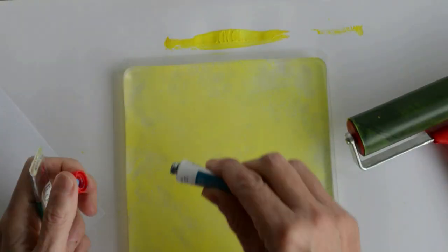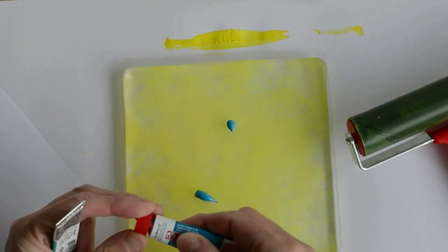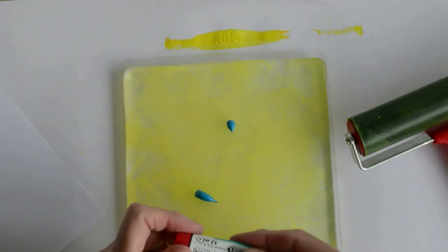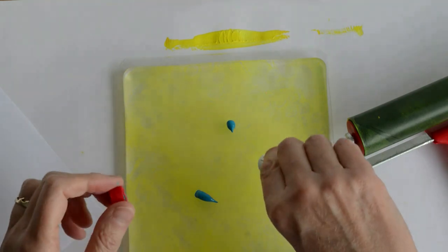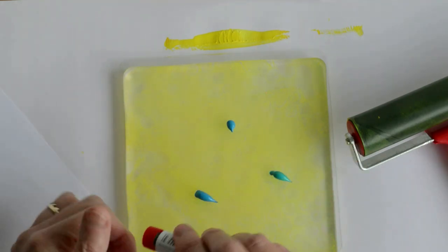You can build up layers, so that's going to be my base layer of this particular print, and then I'm adding a different color over the top. I'm hoping some of the yellow will show through when it prints.